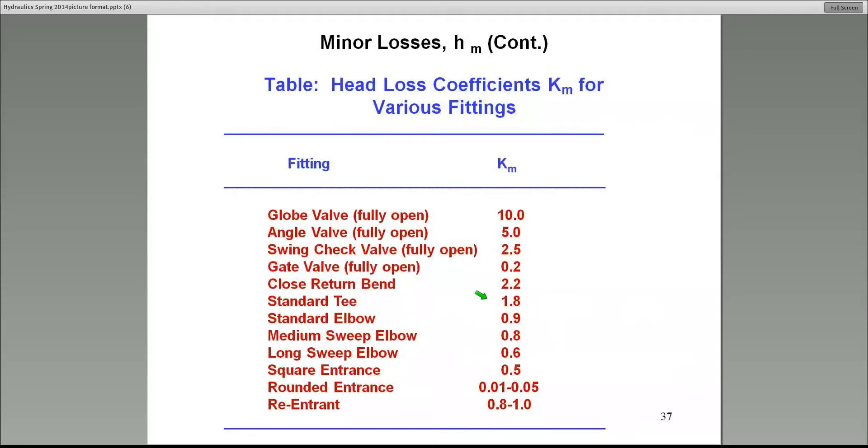Here's the typical K_m values. These are the minor loss coefficients. For example, a fully open globe valve is 10, an angle valve 5. You'll also have to sometimes deal with what we call entrance losses and exit losses. Those K_m values are given at the bottom of the table.